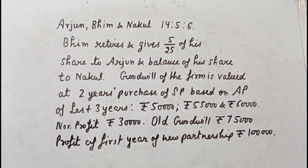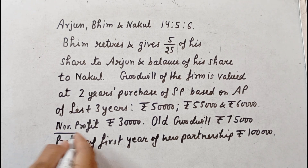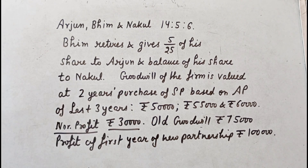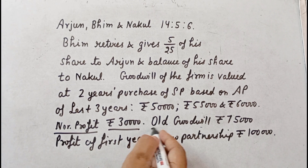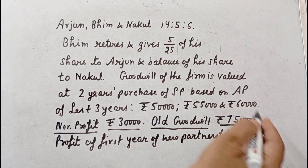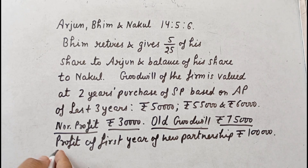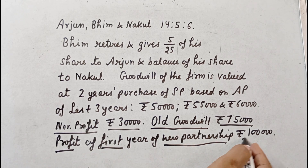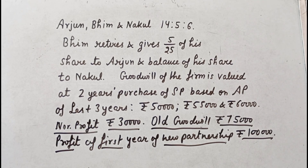50,000, Rs. 55,000, and Rs. 60,000, and the normal profit is Rs. 30,000. Old goodwill appeared in the books at Rs. 75,000 and profit of the first year of new partnership is Rs. 1,00,000. You are required to pass journal entries related to the above information.